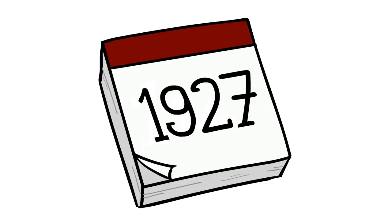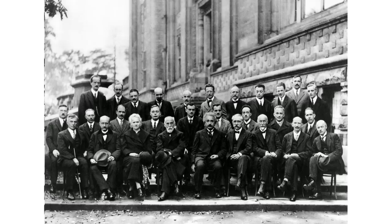The year is 1927. 29 people gather in Brussels to discuss physics. 17 of those people will eventually win a Nobel Prize.